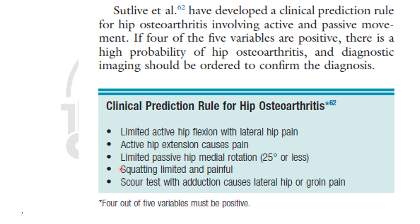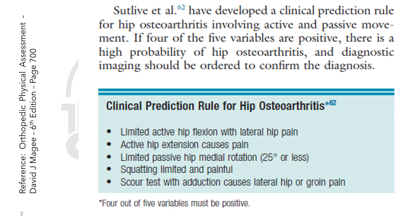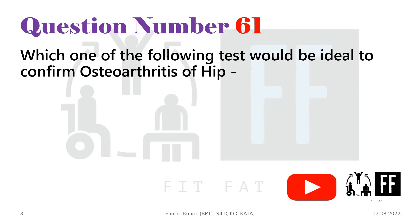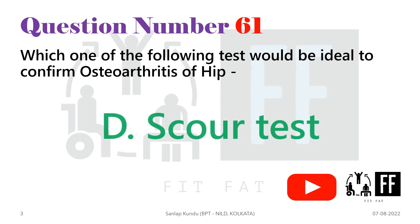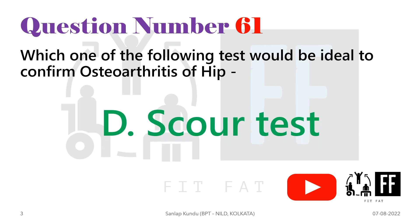This prediction rule includes the scour test. You can check all of this in the Magee orthopedic assessment book. So the answer is option D, that is the scour test.